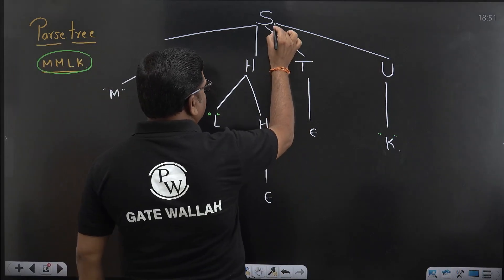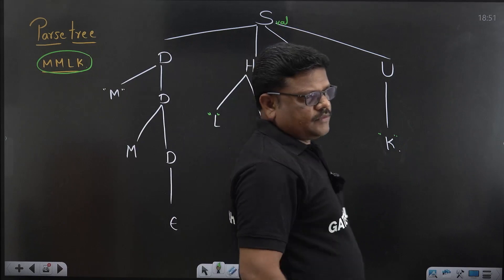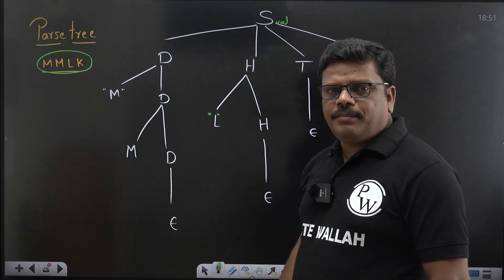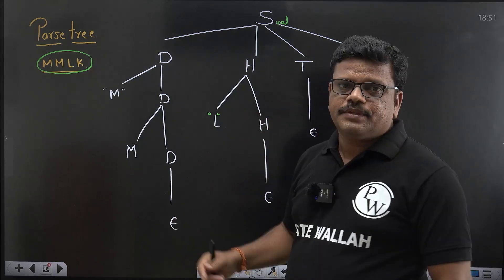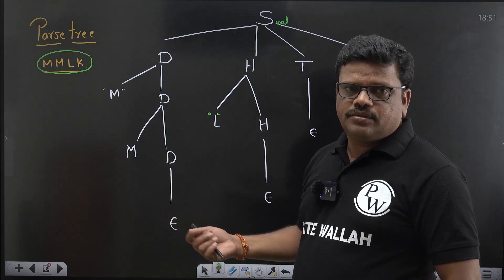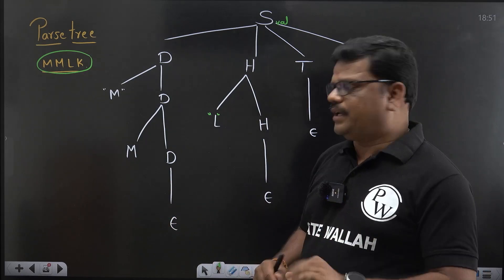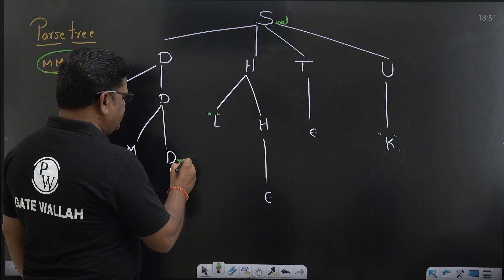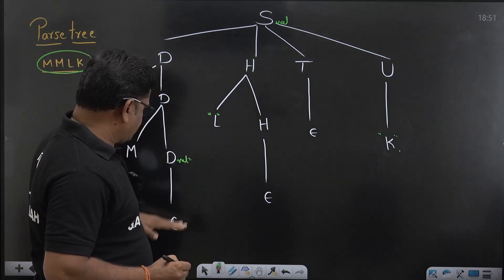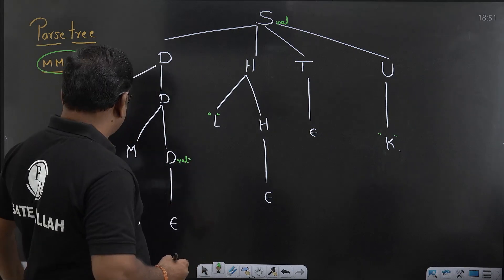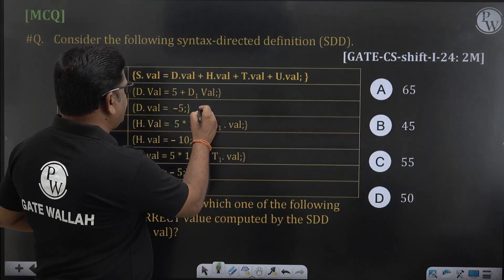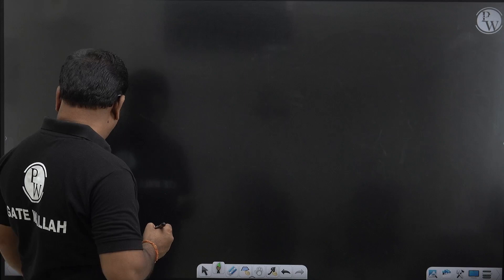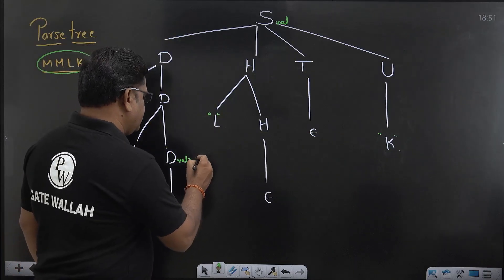Now we want S.val. Since all these are synthesized attributes, we can go from the bottom and compute very easily. Let us start with D.val. Whenever the parser uses the production D → ε, the D.val will be minus 5. So here the value is minus 5.